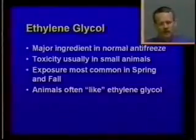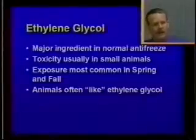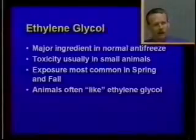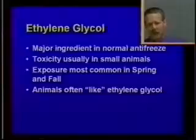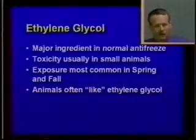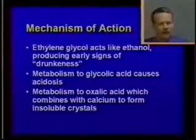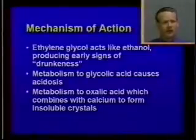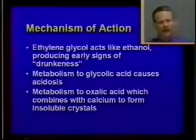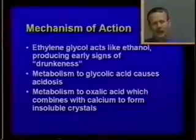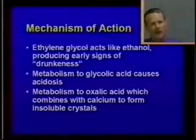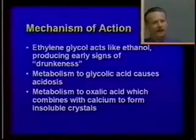One of the next most common toxicities encountered in small animals is ethylene glycol, a major ingredient in antifreeze. Exposures are most common in spring and fall when people change their antifreeze. Unfortunately, animals typically like the taste of ethylene glycol — apparently it's sweet — and we've had cases where dogs chewed through radiator hoses to get it. Ethylene glycol acts much like ethanol in the first phase, producing drunkenness symptoms. After metabolism begins, it's converted to glycolic acid, which produces profound acidosis. Further metabolism to oxalic acid produces insoluble calcium oxalate crystals in the kidney, leading to the third phase: renal failure.